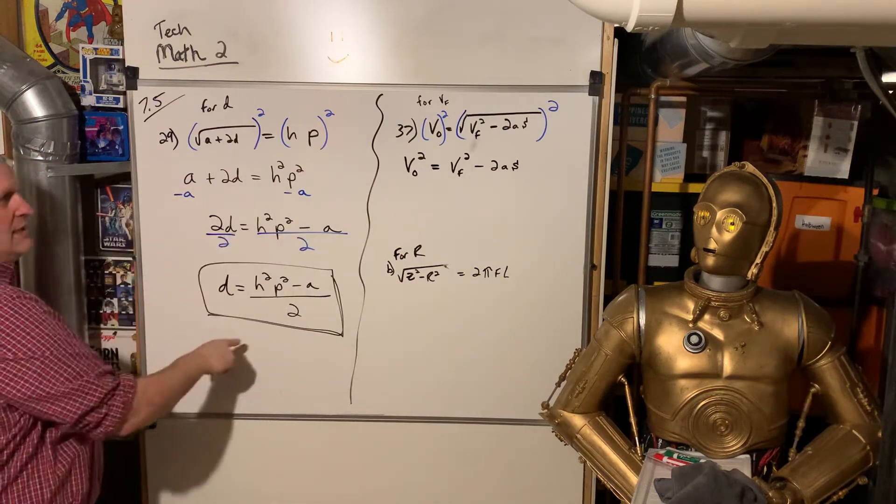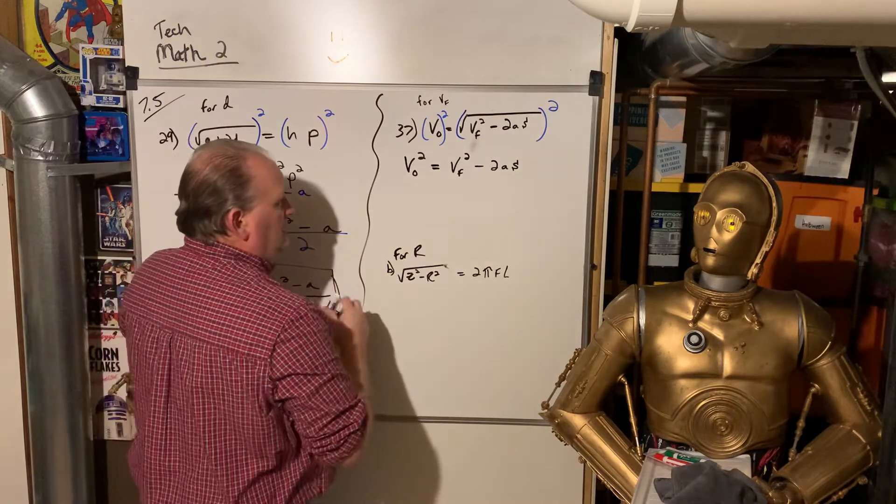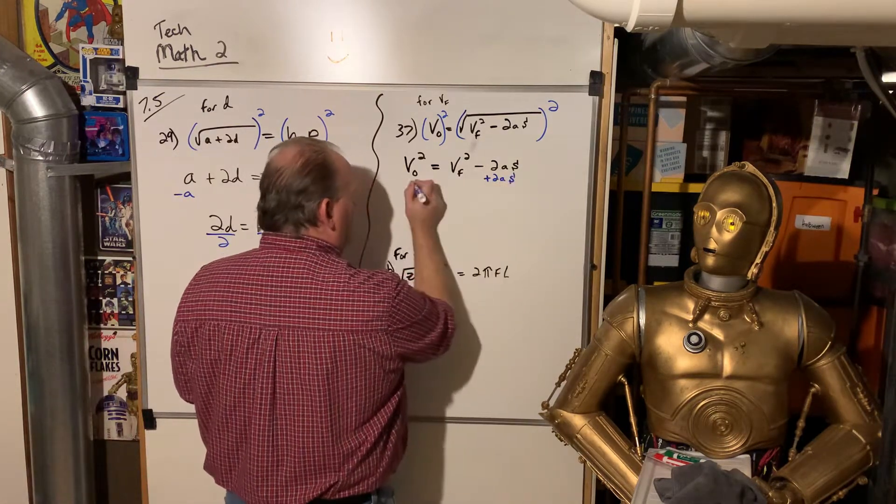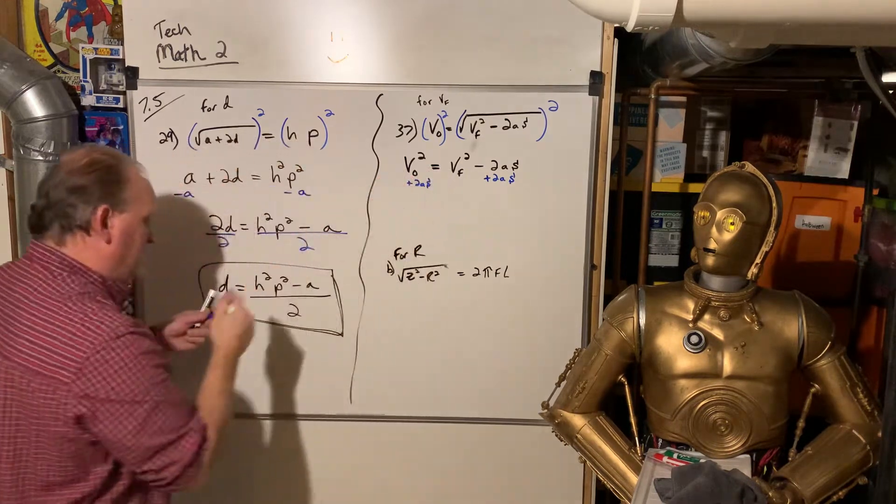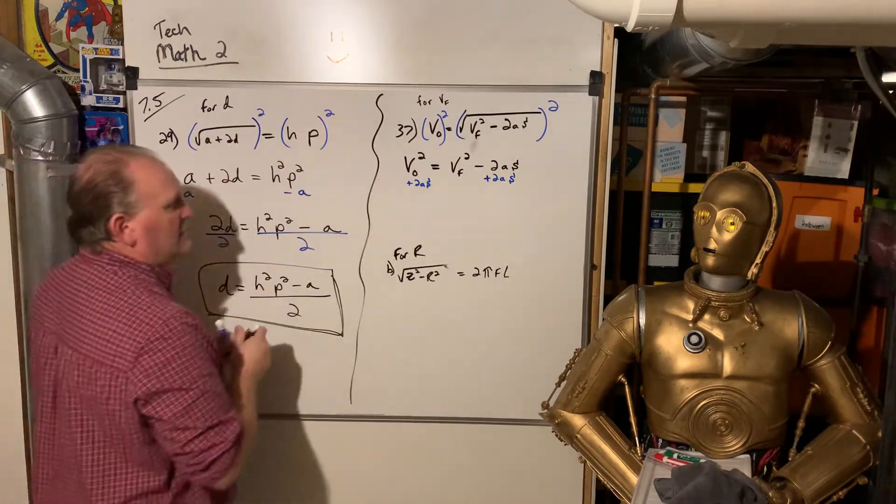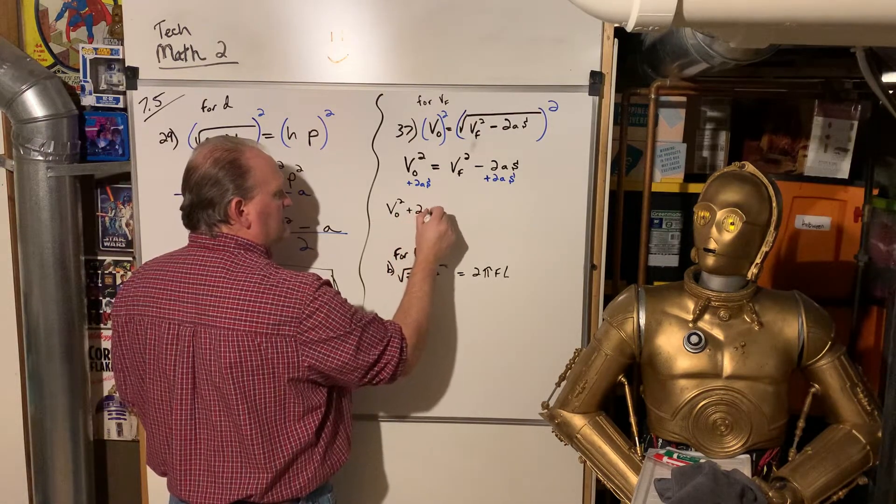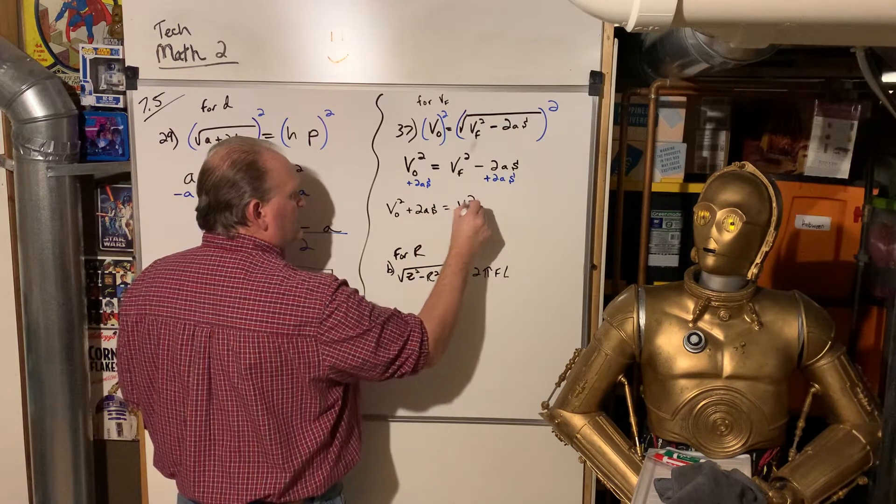Now, just like what we did here, we're going to isolate this variable. So we're going to add 2AS to both sides. But you cannot add that. You can't combine it. You can add it, but it can't be combined because they're unlike terms.